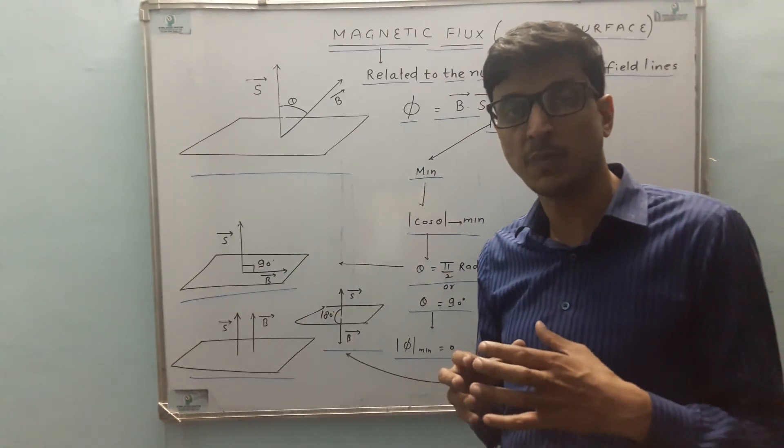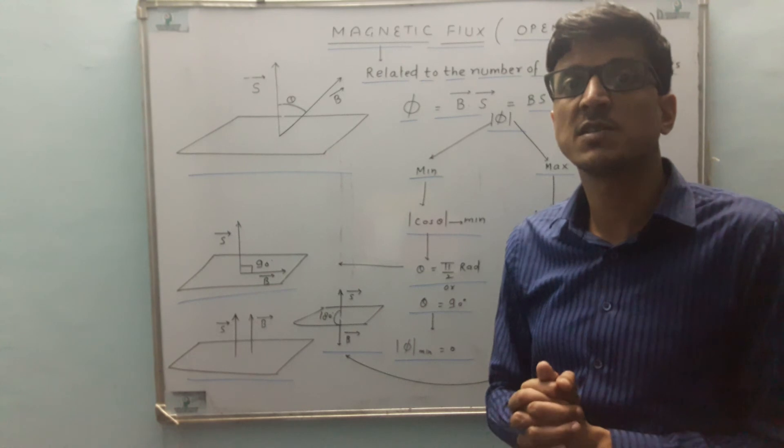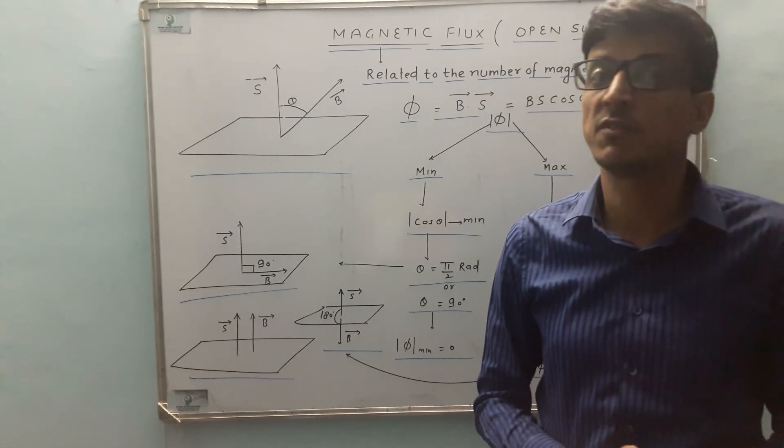When area vector and magnetic field are parallel, then also the magnetic flux will be maximum. And if they are antiparallel then also magnetic flux will be maximum.